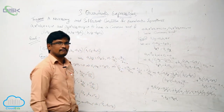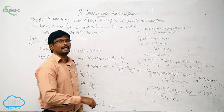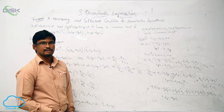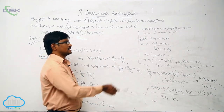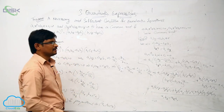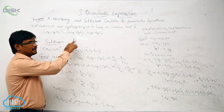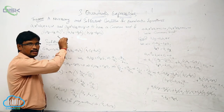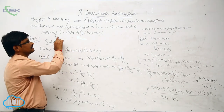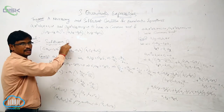This means alpha is a root of the first quadratic equation. Similarly, we can prove that the second quadratic equation also satisfies the alpha value. So this is the necessary and sufficient condition for two quadratic equations to have the same common root. Remember this condition.